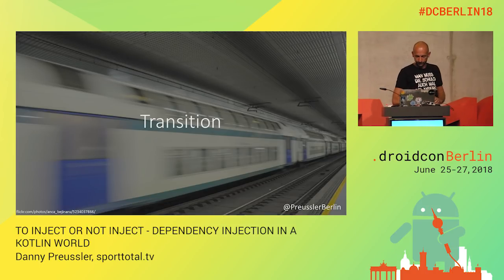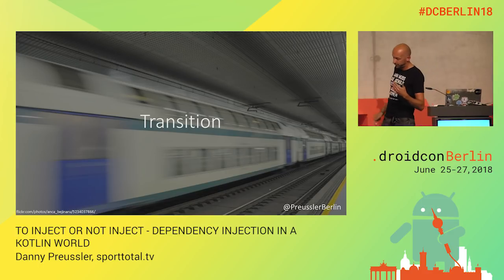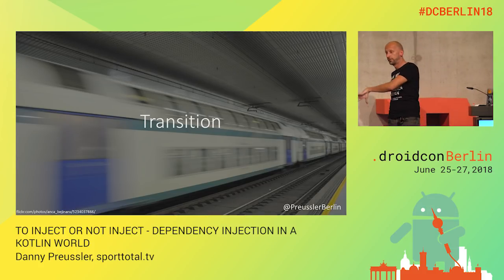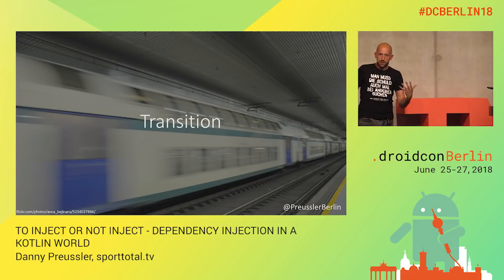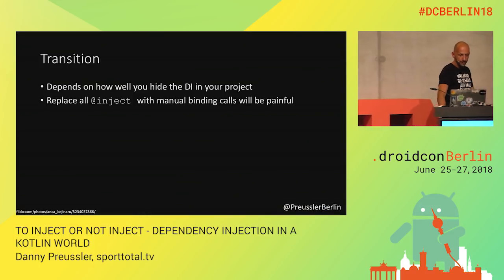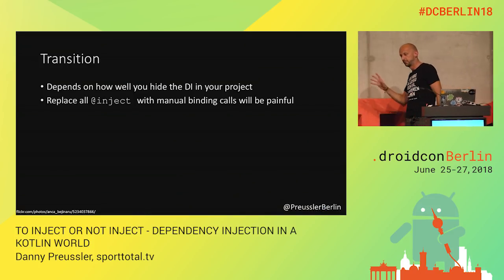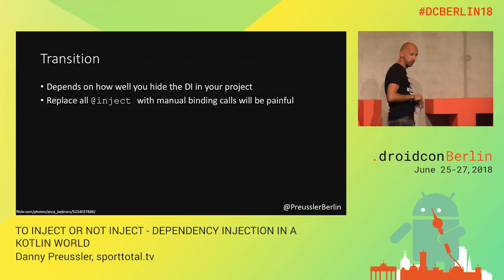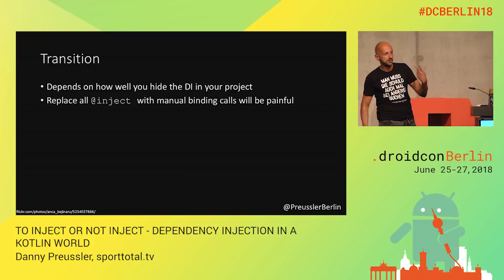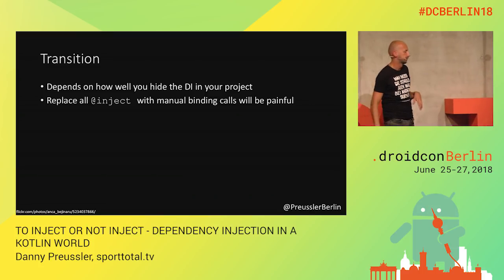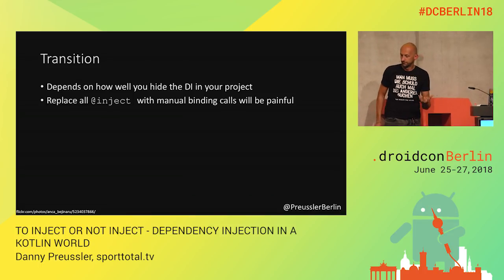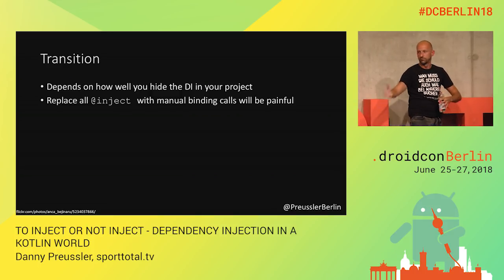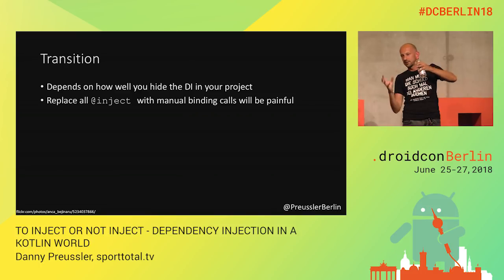Let's talk more about the transition. We started with Toothpick — it was a fresh application — then Toothpick Kotlin extensions, then moved the phone part to Koin to see how it goes, then migrated the TV part from Toothpick to Koin. Things I learned: how easy it is to change depends on how well your dependency injection is hidden. At Groupon, migrating from Dagger to Toothpick took us a day — plus one day to clean up bugs — but only because it was very encapsulated. The problem is it's a bit harder moving from the Java way to the Kotlin way.